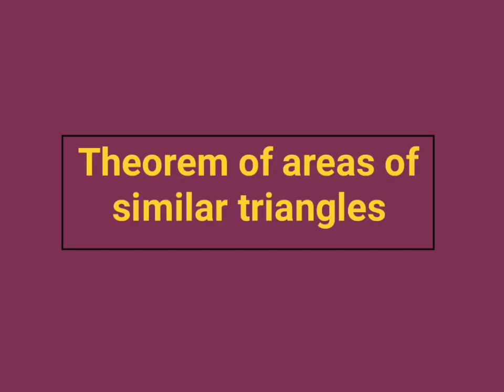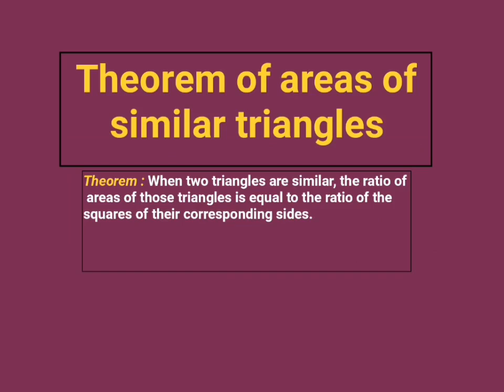Hello friends, welcome to Supreme Education. We are going to learn the theorem of areas of similar triangles. The statement of this theorem is: when two triangles are similar, the ratio of areas of those triangles is equal to the ratio of the squares of their corresponding sides. Now, the first step to prove any theorem is to draw a proper diagram.